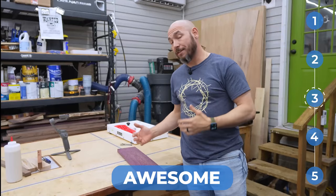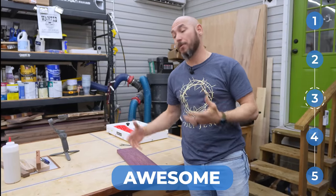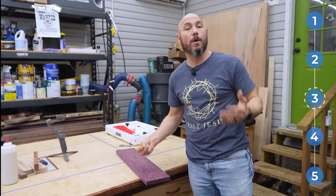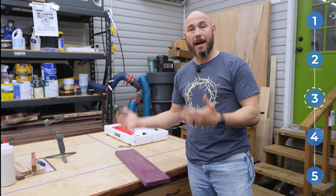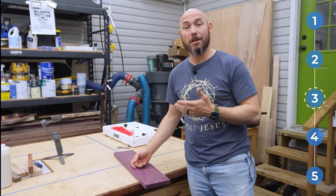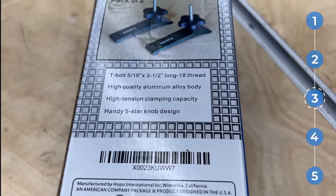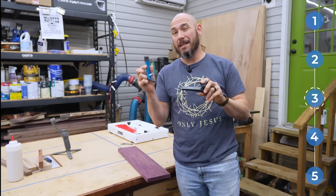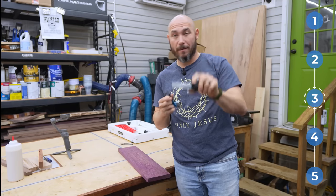If you have a work table that has T tracks, they can be invaluable to actually hold things down while you're working on them, like sanding, routing, many other different things. You need stuff to stay still while you're working on it. I have a couple of different styles here, but these don't work as good as these. Let me show you.